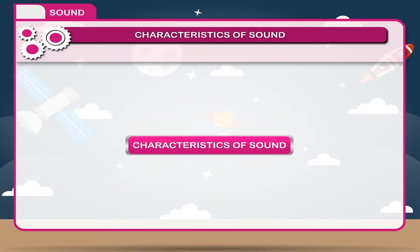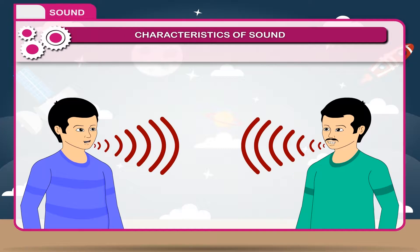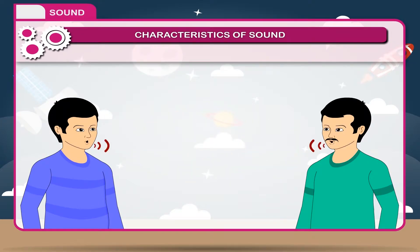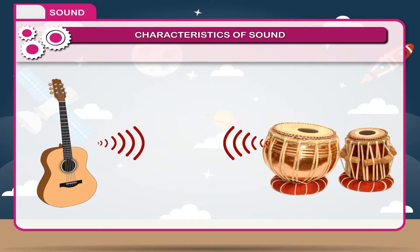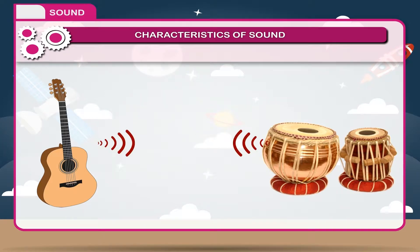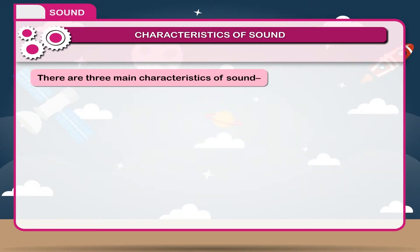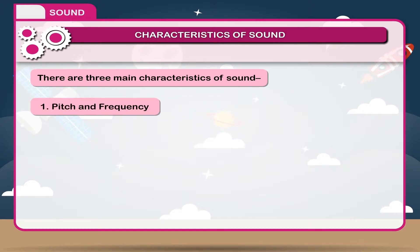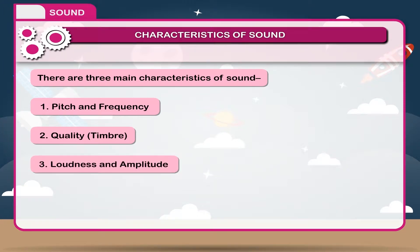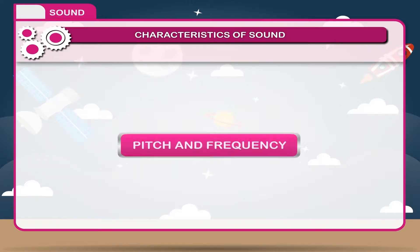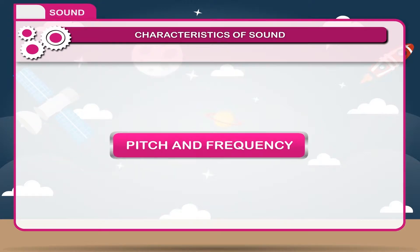Characteristics of sound. The sound produced by one person is different from another, and the sound produced by one instrument is different from another instrument. In order to distinguish various sounds, the characteristics of sound help us. There are three main characteristics of sound: one — pitch and frequency; two — quality and timbre; three — loudness and amplitude.